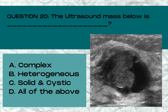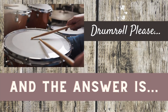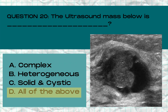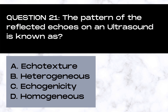Question 20. The ultrasound mass below is: A. Complex, B. Heterogeneous, C. Solid and Cystic, or D. All of the above. And the answer is D. All of the above. This mass has both solid and cystic components. It has an uneven level of brightness throughout the mass with different echogenicities, making it also complex and heterogeneous.